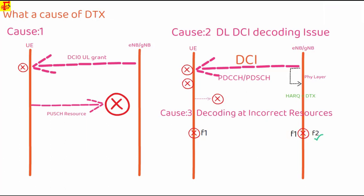When eNodeB has transmitted but UE has not decoded, or decoding at incorrect resources. So these are the reasons where DTX is observed. I hope you understood DTX.